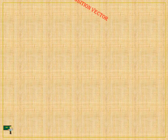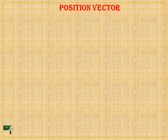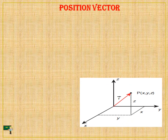Let's see the position vector first. What do you mean by this position vector? In this picture, you can see there are two axes — X, Y, and Z. All three have been merged or connected at one point. This position is called P. X, Y, and Z are at position P.